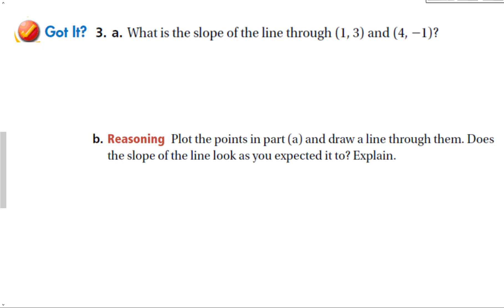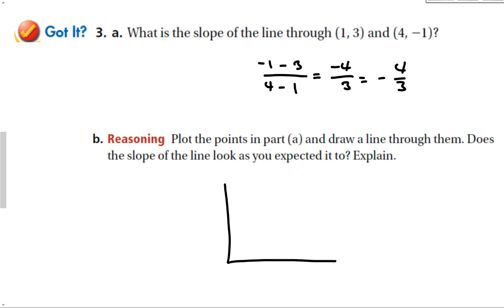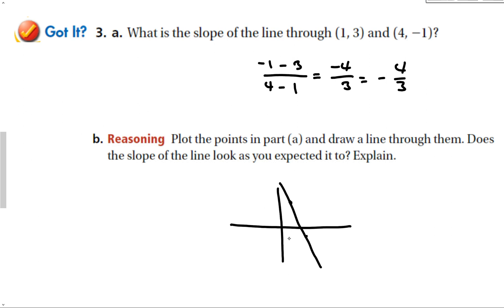Finding the slope through (1, 3) and (4, −1): using (y₂ − y₁) / (x₂ − x₁) gives −4 / 3, which is −4/3. Plotting the points — right 1 up 3, right 4 down 1 — shows a line going down, consistent with a negative slope of −4/3, going down 4 and right 3.